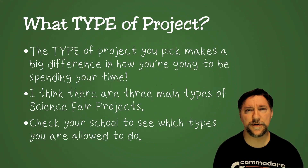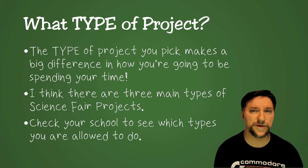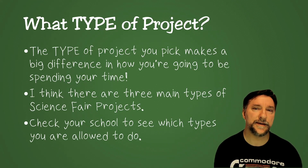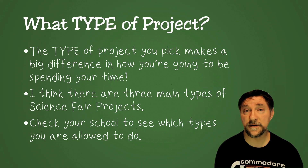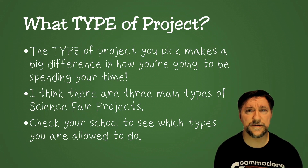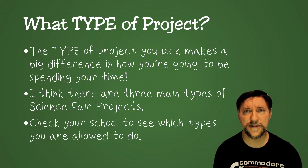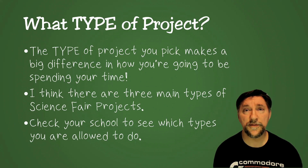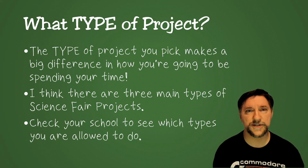The first question is the type of project. The type of project is the big classification — what are you going to be doing? Making this decision is important because it decides how you'll be spending a lot of the rest of your time. The main three categories in my district are experiments, inventions, and discoveries. Check with your district to see which of these are options for you.